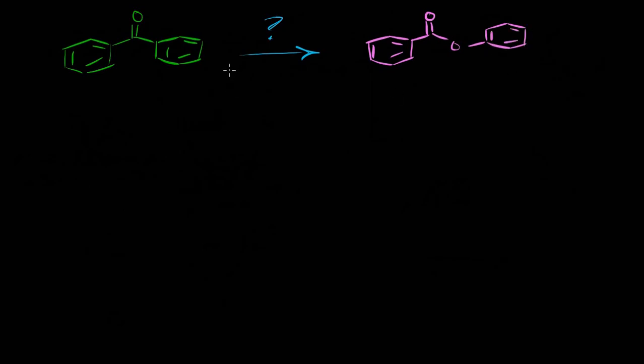We said the way we're going to do this is through the Baeyer-Villiger reaction. All that includes in order to do this is simply some sort of peroxy acid, and the last thing of course is our starting material which is a ketone.